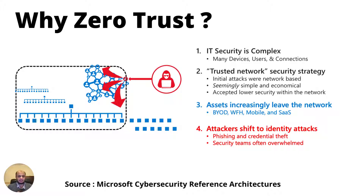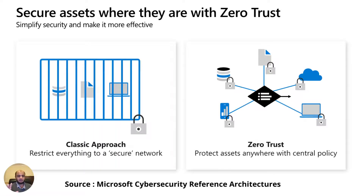This is from the Microsoft Cybersecurity Reference Architecture — I would definitely advise you to take a look at it. It explains zero trust in an excellent way, though all cloud providers have similar documentation. The classic approach restricted everything to a secure network perimeter. In zero trust, it doesn't matter where the device, data, users, applications, or APIs are coming from — you enforce security wherever they are. The role of security changes from something that restricts business to something that enables business.